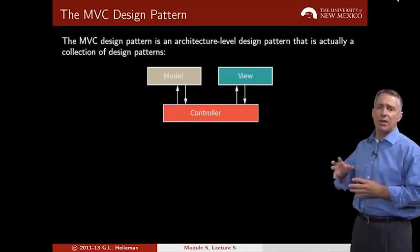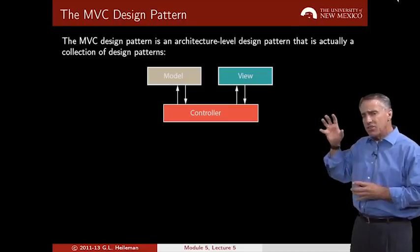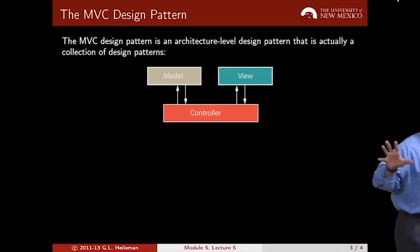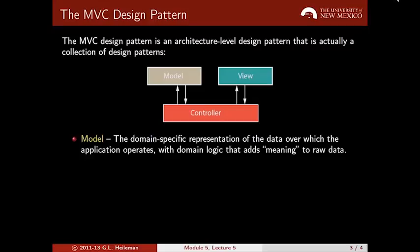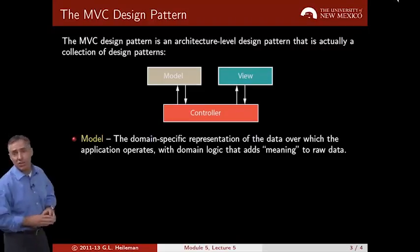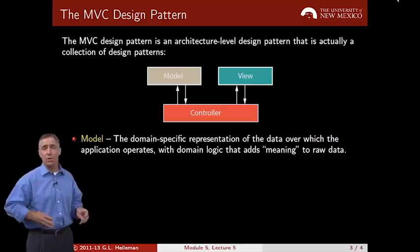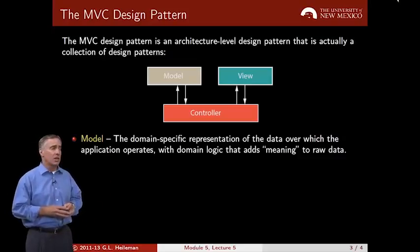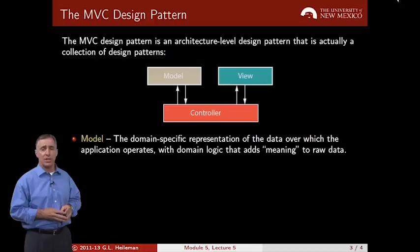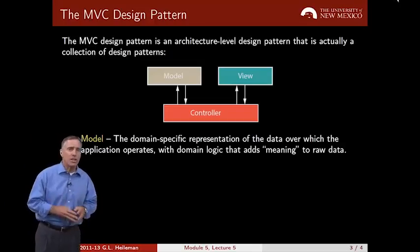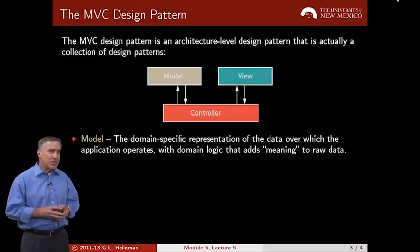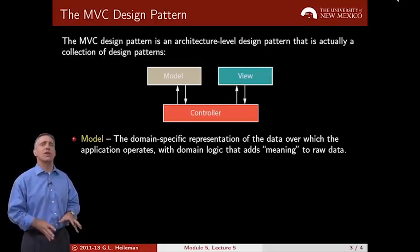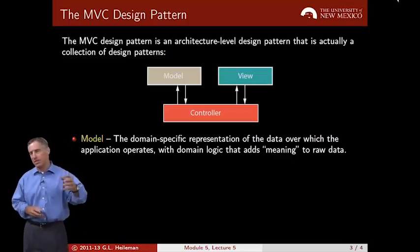The model-view-controller design pattern is actually a collection of other design patterns — it's an architecture-level design pattern with three components. The controller mediates between the model and the view. The model is the domain-specific representation of the data associated with your application, and domain logic gives meaning to that data. In Rails, we use active records to help maintain this model and connect it to a database.